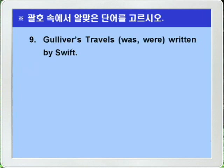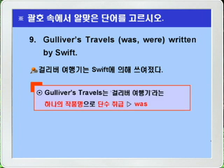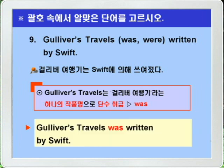Question 9: 'Gulliver's Travels was/were written by Swift.' Although 'Travels' has a plural -s ending, 'Gulliver's Travels' is the title of a single literary work, so it is treated as singular. Therefore the singular verb 'was' is the correct answer. Answer: Gulliver's Travels was written by Swift.